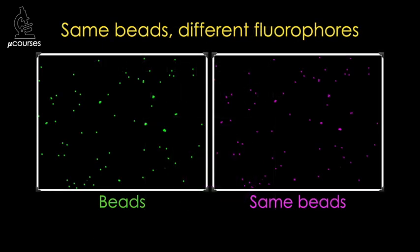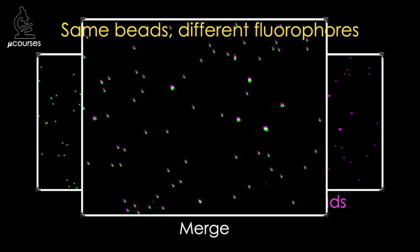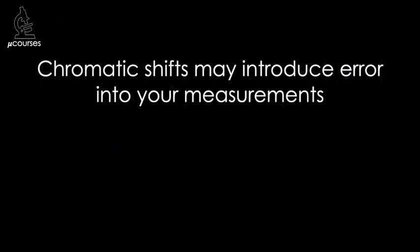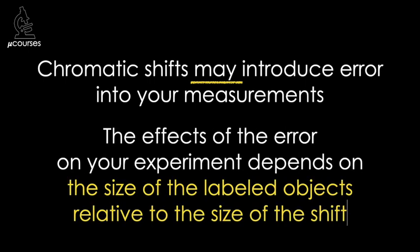These are digital images of a known sample — fluorescent beads that are each labeled with more than one fluorophore. When we merge these together, you can see that in this example there's a chromatic shift across the entire field of view. Since we know both the green and magenta fluorophores are attached to the same bead, something has got to be wrong here. Gone undetected, these chromatic shifts may introduce an unacceptable level of error into your measurements. Why do I say 'may' instead of 'will'? That's because the effects of the error on your experiment depends on the size of the labeled object relative to the size of the shift, and the size of chromatic shifts can vary quite a bit.